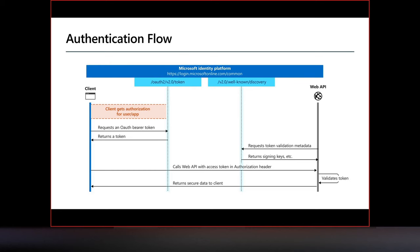The authentication flow is straightforward. Azure AD exposes two endpoints: the token endpoint and the discovery endpoint. The client requests a bearer token from the token endpoint by passing the client ID and secret; the token endpoint returns a token after validating those credentials. The client then calls the protected API with the access token as an authorization header. The web API validates the token against the discovery endpoint and, if valid, returns the requested data.